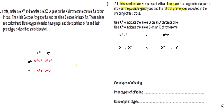Crossing these gametes in a Punnett square gives the following offspring genotypes: X^G X^B (tortoiseshell female), X^B X^B (black female), X^G Y (ginger male), and X^B Y (black male). The phenotypes are: tortoiseshell female, black female, ginger male, and black male. The ratio of phenotypes is 1:1:1:1 as we have one of each phenotype in the cross.